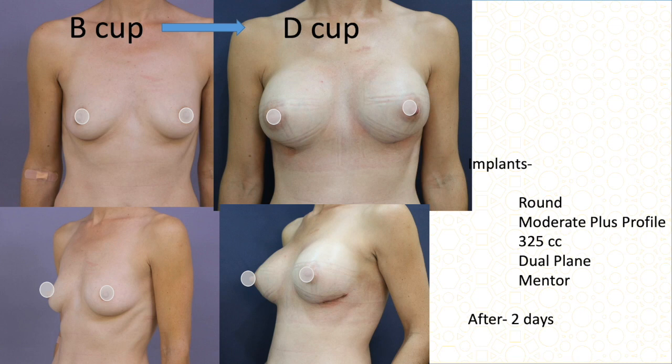Another B cup patient, thinner, but with good stretchability in her tissues. She wanted D cup, so I used 325 cc moderate-plus profile in dual plane. This was photographed just after the first dressing, 48 hours post-surgery. She went from B cup to D cup.